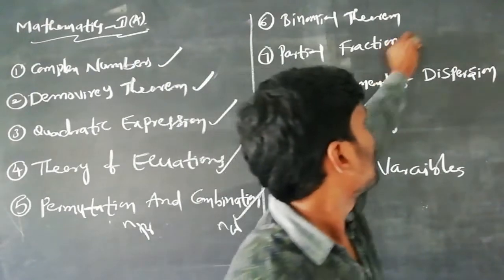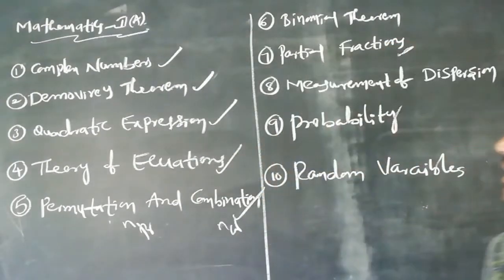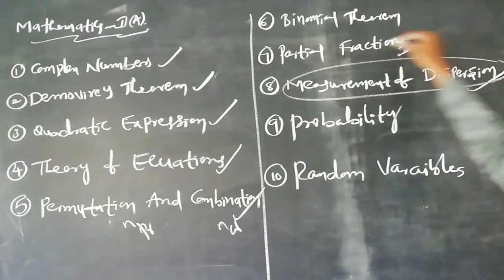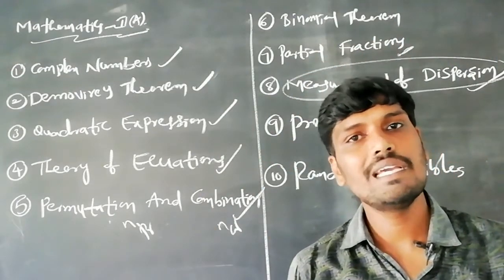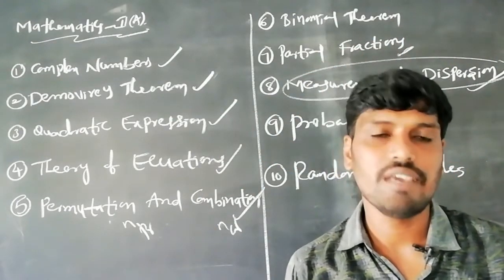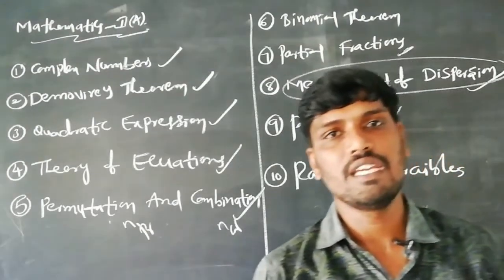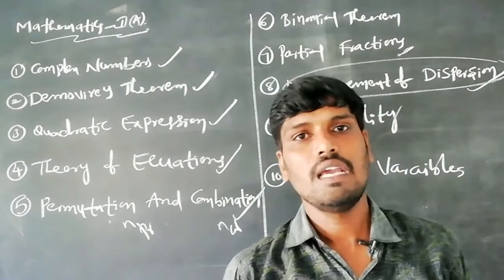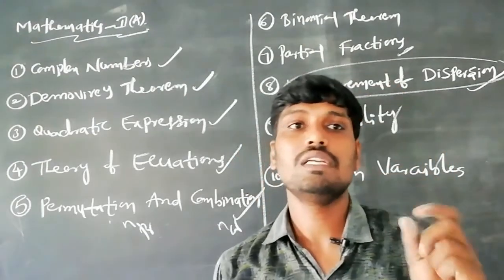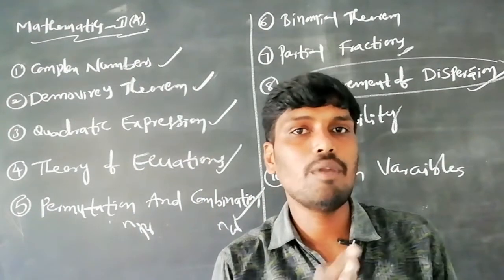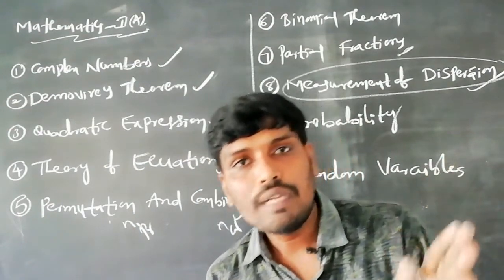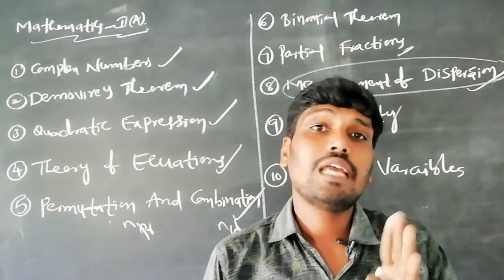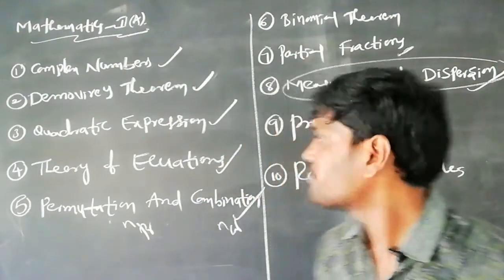After that is Measures of Dispersion — Statistics — covering mean, median, variance, standard deviation, and coefficient of variation. Different problem types come from different table formats, including grouped data and ungrouped data, which appear in the MSET exam.